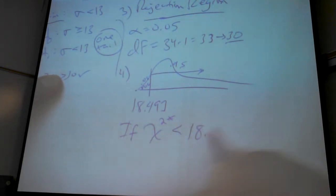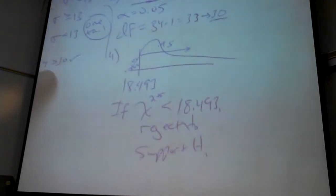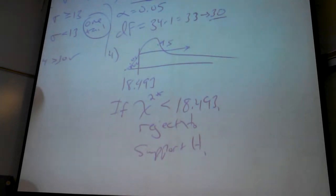...less than. Because I can see where my little rejection region is, right? 18.493, then we can reject the null. Support.